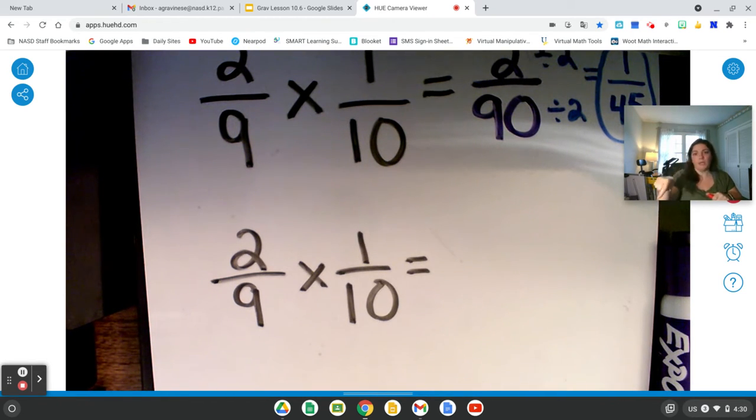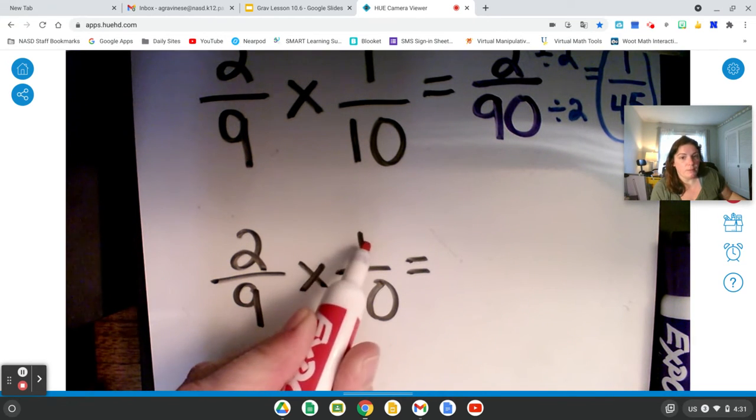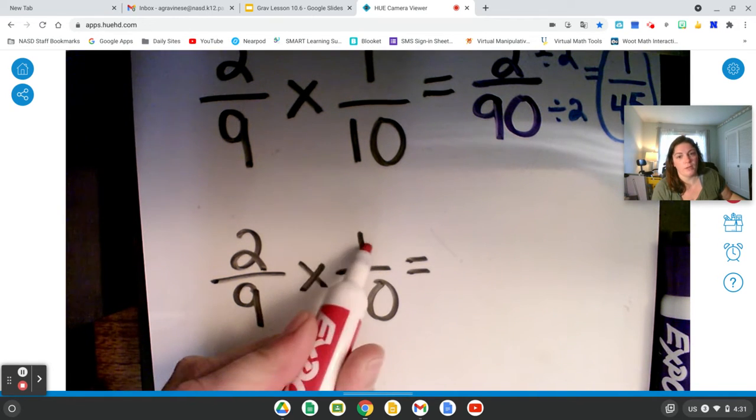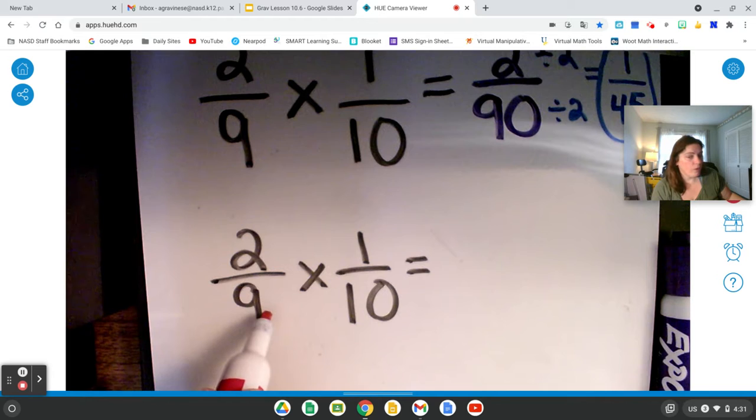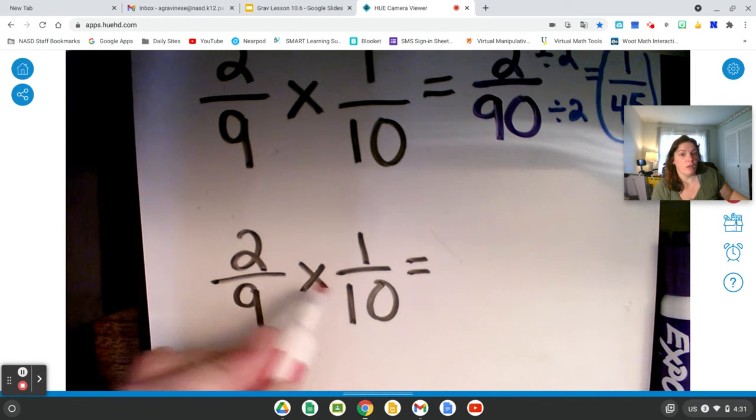You can always check your diagonal numbers. Your diagonal is like an x or a slash. To see if you can simplify the problem. If I check this diagonal with 1 and 9, I have a 1. And because there's a 1 there, I know I can't simplify it. Check your other diagonal. I have 2 and 10.